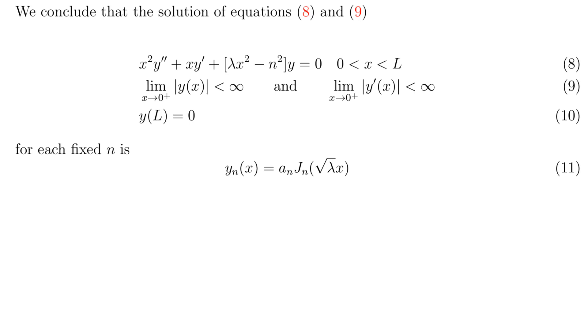So the solution that satisfies equations 8 and 9, we still haven't used equation 10, but the solution that satisfies 8 and 9 is given in equation 11, a constant multiple of j sub n of the square root of lambda times x.